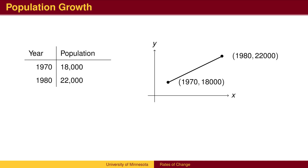Suppose we are interested in the population growth of a town and know the population in both 1970 and 1980. Let's assume the population is growing at a constant rate and therefore the graph of the population is a straight line.